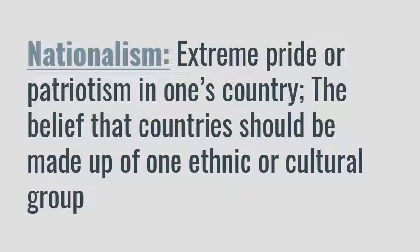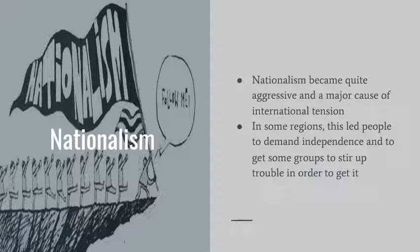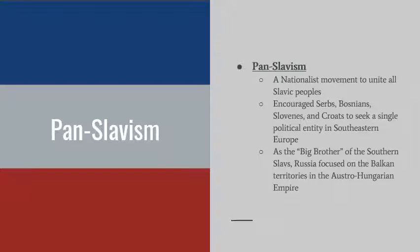The final long-term cause is nationalism — extreme pride or patriotism in one's country, or the belief that countries should be made up of one ethnic or cultural group. In the case of the Great War, nationalism became quite aggressive and a major source of tension. In some regions, it led people to demand independence. In Austria-Hungary, many different ethnic groups demanded their own nations, and some used Pan-Slavism to stir up trouble. Pan-Slavism is a nationalist movement to unite all Slavic peoples.